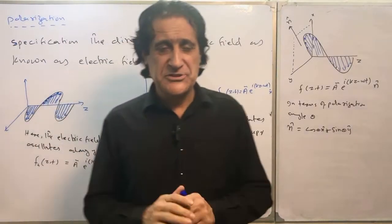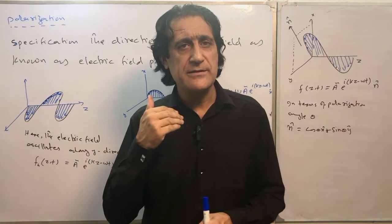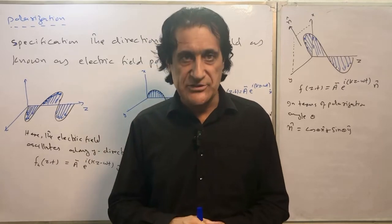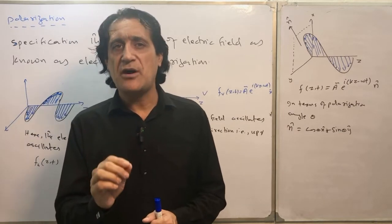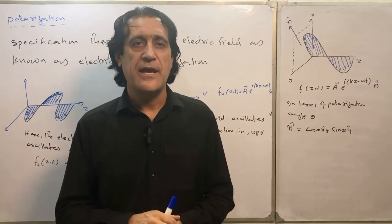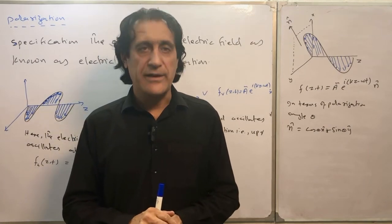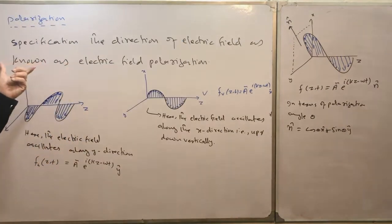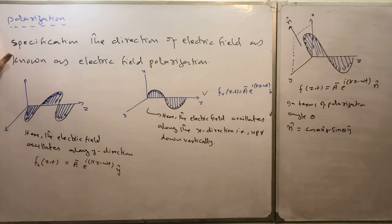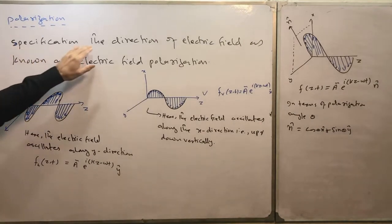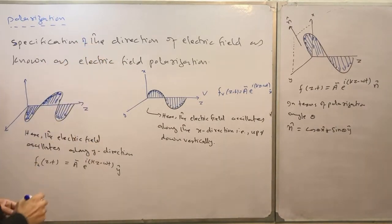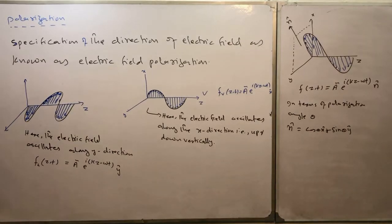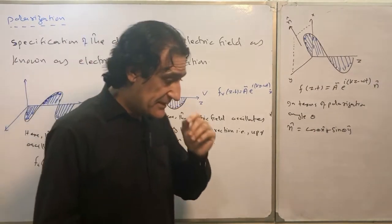What is polarization? It is also known as electric field polarization. It means the specification of the direction of the electric field — this is known as electric field polarization. I have written the definition: the specification of the direction of the electric field is known as electric field polarization. The electric field can be specified in any direction.